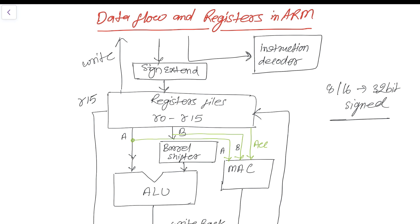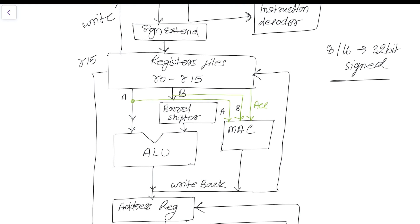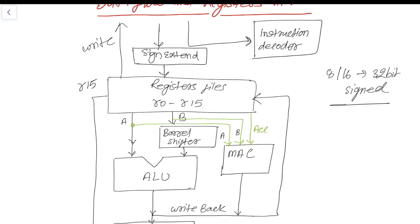To recap the whole data flow register model: data items are placed into register files, which are a storage bank made up of 32-bit registers. Since the ARM core is a 32-bit processor, most instructions treat registers as holding signed or unsigned 32-bit values. The sign extend hardware converts 8 and 16-bit numbers to 32-bit values as they are read from memory and placed into the registers.